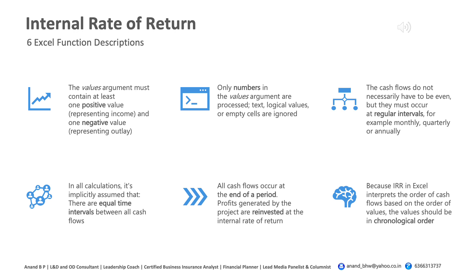your outlay. The outlay represents the outflow of money which goes out of your pocket. All positive values show the money you are going to receive at the end of the term or on maturity. The second important factor: only numbers in the value argument are processed. Text, logical values, or empty cells are completely ignored. So we should only be entering numbers — nothing beyond that.